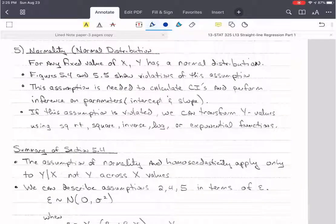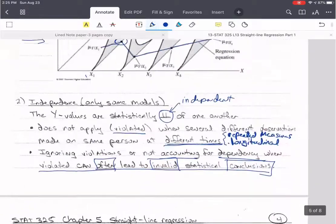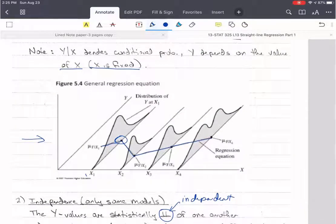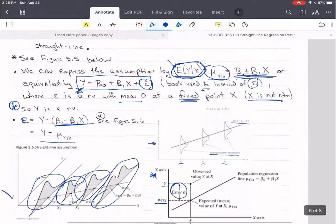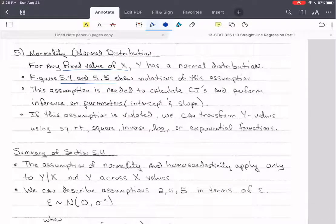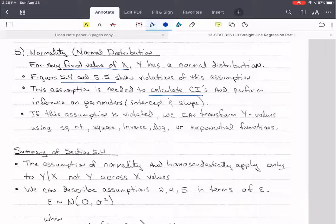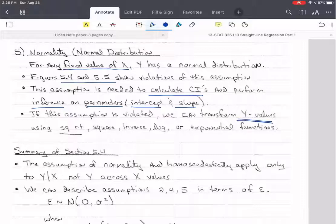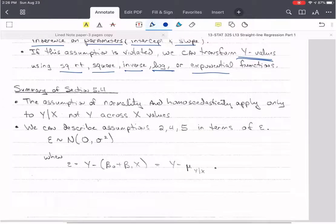Now for our last assumption, and that is that the data is normally distributed for each value of x. So for any fixed value of x, we're fixing x, then y has a normal distribution. Again, both figures 4 and 5 that we looked at showed violations of this. Here's figure 5 and here's figure 4. And you'll see that none of them look normally distributed. They all look skewed or bimodal. So this assumption, we have to have this assumption in order to calculate our confidence intervals and to perform inference on those parameters, which are the betas, and specifically intercept and slope in this chapter. If this assumption is violated, we can often transform the y values using a square root or a square or an inverse, which is 1 over, a log, usually the natural log, or an exponential function. We can try each of those and see if our normality is then met.